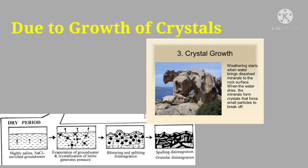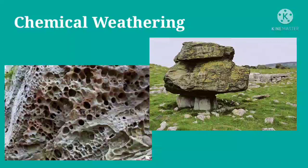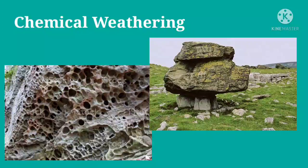Now let us discuss chemical weathering. Chemical weathering is the disintegration or decomposition of rocks due to chemical reaction, mainly due to water and dissolved substances present in the rock. When the rock disintegrates through chemical weathering, the disintegrated material has different chemical properties — the chemical composition changes upon disintegration. Water plays a very significant role, as without water no chemical weathering takes place. Therefore, chemical weathering predominates in hot and humid regions like equatorial, tropical, and subtropical regions.